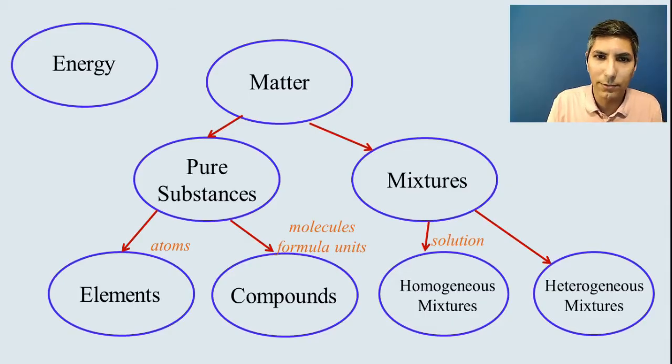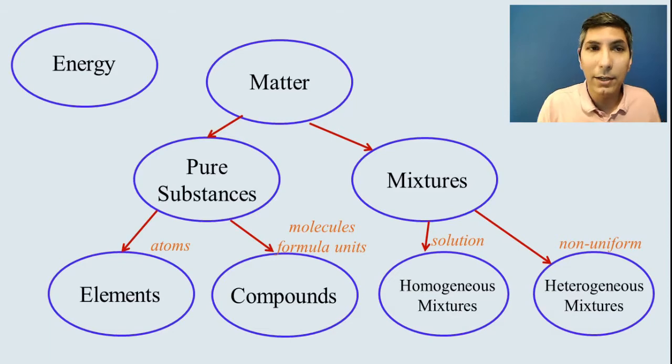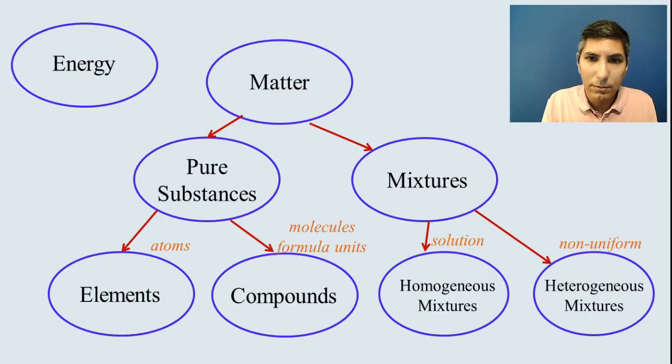On the other hand, a heterogeneous mixture is when you have several different components and it's non-uniform. That means that with the naked eye, you are able to see different parts, different chunks, like in concrete. You can look at that and see that there are pebbles, little rocks, or there's the cement in there. There might be grains of sand. So that's a heterogeneous mixture because you can see with your eyes the different phases or the different parts of that mixture.